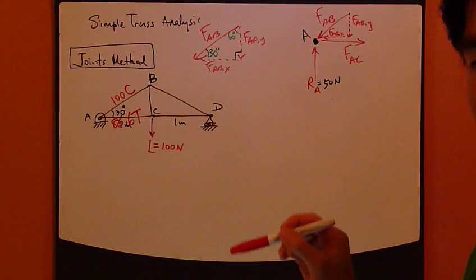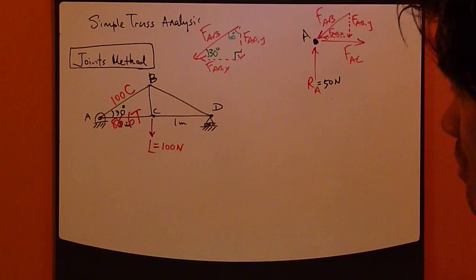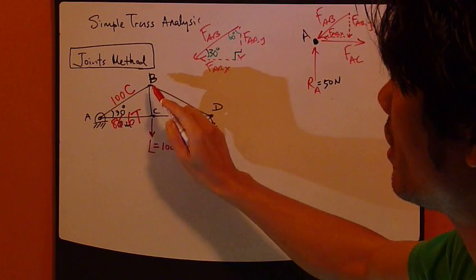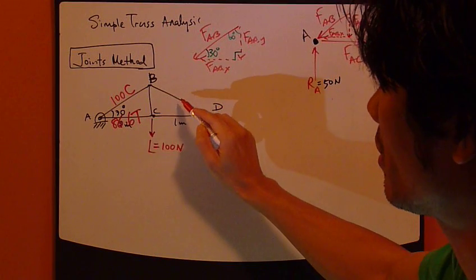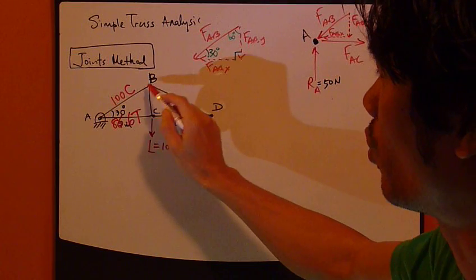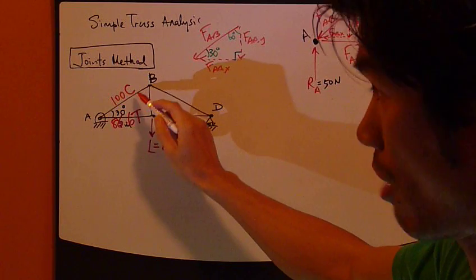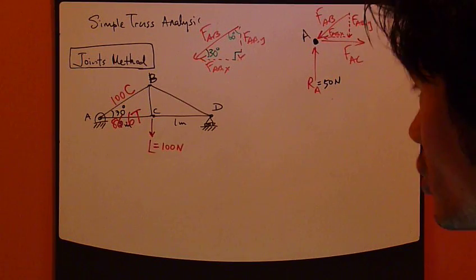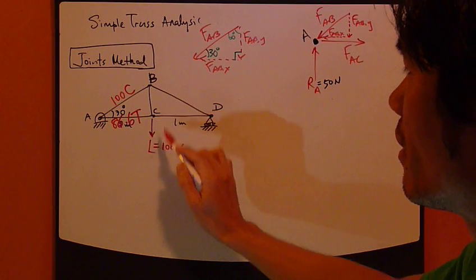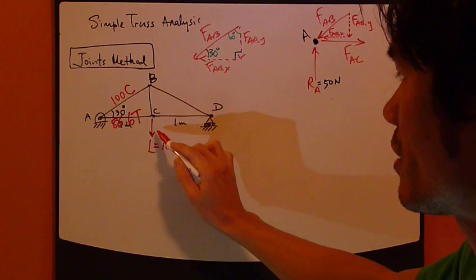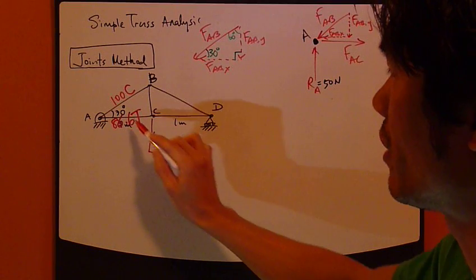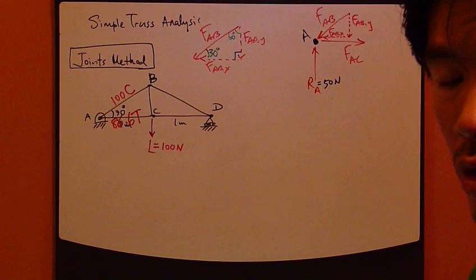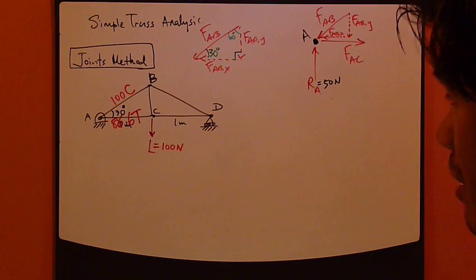Keep in mind a joint should have no more than two unknowns, two unknown forces. Let's say joint B - joint B has three forces acting on it, one of them being a known quantity now, so two unknowns. That's fine. Joint C has four forces, two being known quantity, so that leaves two unknowns. That's fine too. So either way.